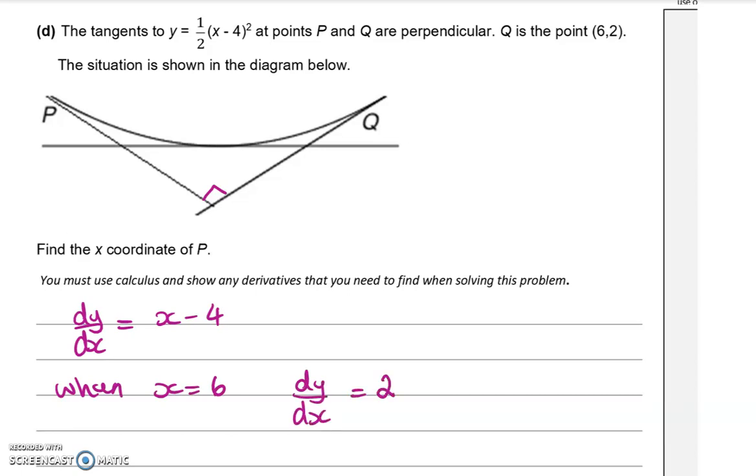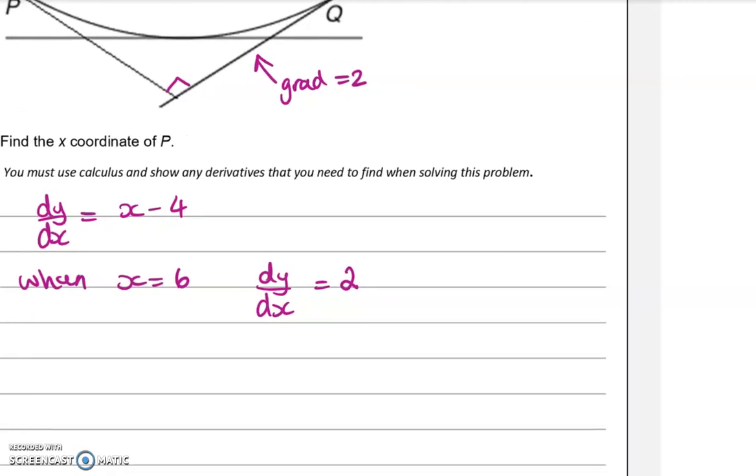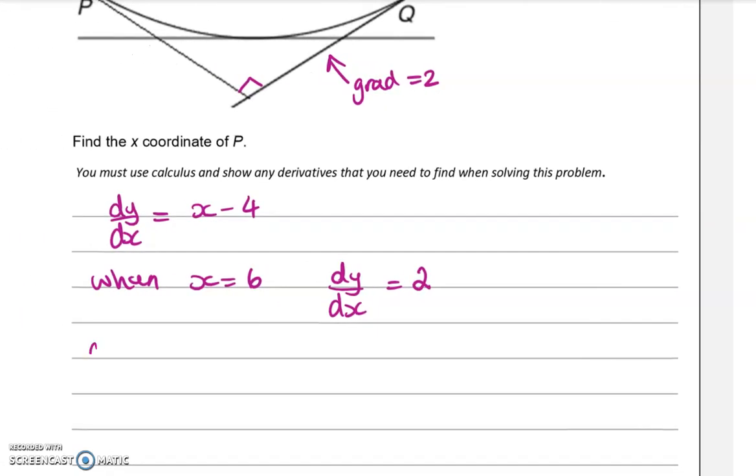So the gradient of the line, the tangent that goes through Q, that gradient is 2, which means that the gradient through P will be the negative reciprocal of that: minus 1 half.